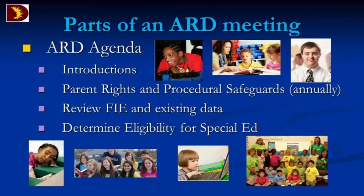It's good to introduce yourselves. Procedural safeguards should have been provided prior to the ARD. We usually talk about the evaluation and what other data we brought to the table. Based on that, a decision is made: does the child have a disability? If he has a disability, does he need special education? Does the ARD committee agree he should receive special education? By that time you're about to the end of page two in the ARD.